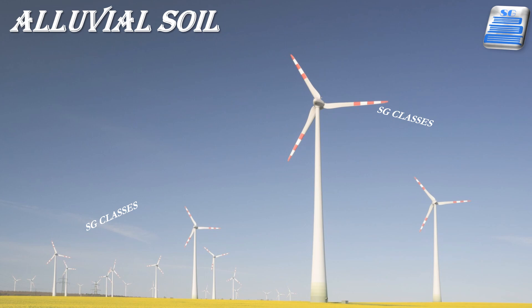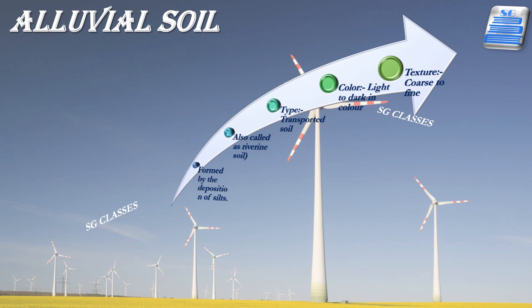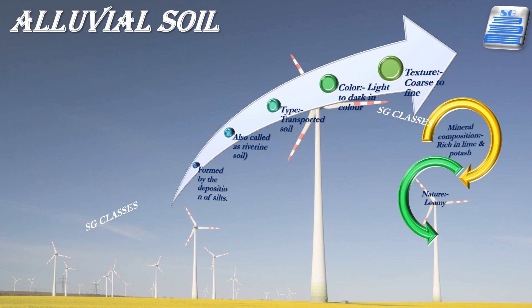The entire northern plains are made of alluvial soil, deposited by three important Himalayan river systems: the Indus, Ganga and Brahmaputra. It is also found in Rajasthan, Gujarat and eastern coastal plains, particularly in the deltas of the Mahanadi, Godavari, Krishna and Kaveri rivers. Alluvial soil consists of various proportions of sand, silt and clay. As we move inland, soil particles are bigger; on upper valley sides, the soil is coarser. Crops like rice, wheat, sugarcane and jute grow in this soil.